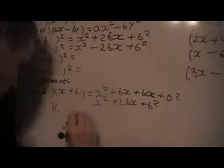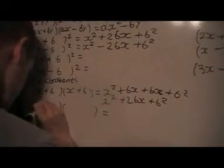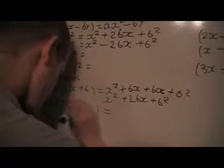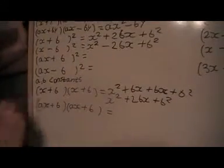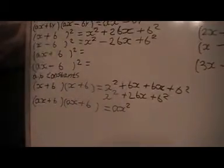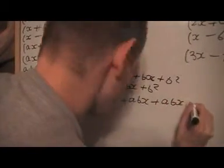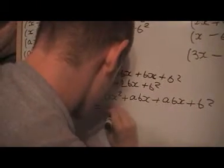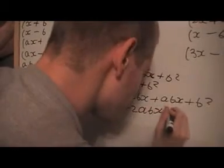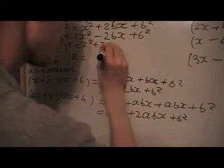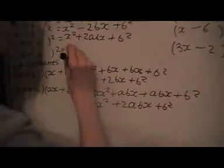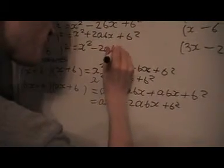Now I'm going to write the next one out in full. There's a constant at the front, a, which is the main difference. So ax times ax gives a squared x squared. Then I get a plus abx term from multiplying across, and another one, plus b squared — so a squared x squared plus 2abx plus b squared. And again, the same applies with a minus in the middle.